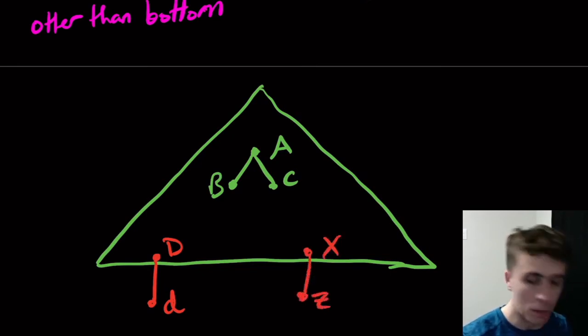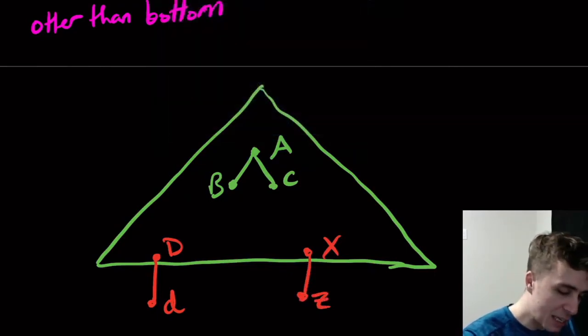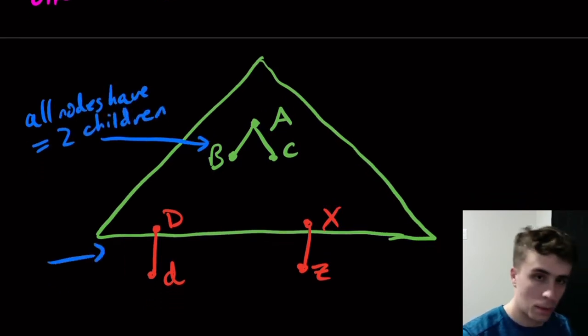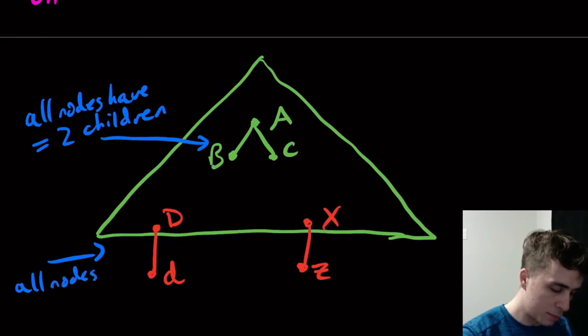And it doesn't necessarily have to be these two variables D and X don't have to be at the same level. D could be way higher in the tree. It's just at the bottom, across the bottom of the tree, wherever those are, it has this structure.